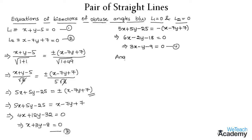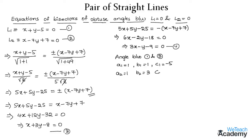Now we need to find the angle between equation 1 and equation 3 to determine whether the angle is acute or obtuse. From equation 1: a1 = 1, b1 = 1, c1 = −5. From equation 3: a2 = 1, b2 = 3, c2 = −8. The angle between a pair of straight lines is given by: tan θ = |a1·b2 − a2·b1| / (a1·a2 + b1·b2).